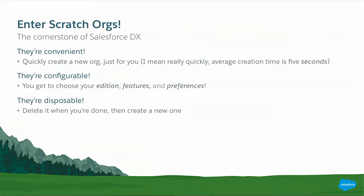Scratch Orgs are ephemeral. They are going to be created and destroyed really, really quickly. To help with this, we made them as convenient as possible. When you want a Scratch Org, you can get one within seconds of the create request. And when you get it, it's going to be completely devoid of any data, metadata, or anything else that may get in your way of your experimentation or development. Starts you with a clean slate, ground zero.